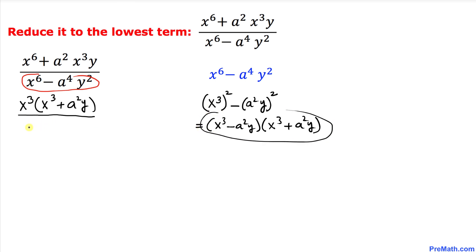Let me replace that. So I'm going to write (x^3 minus a^2 y) times (x^3 plus a^2 y).